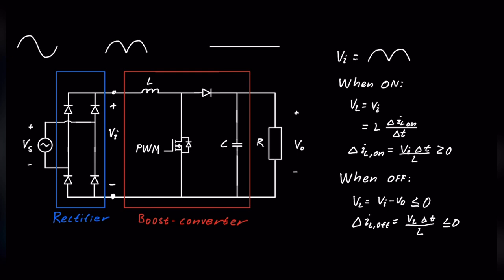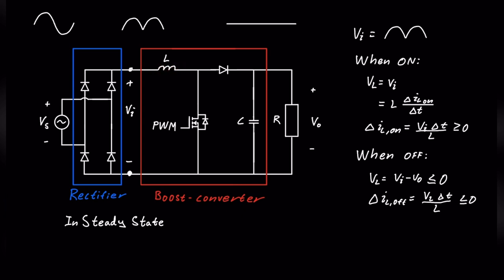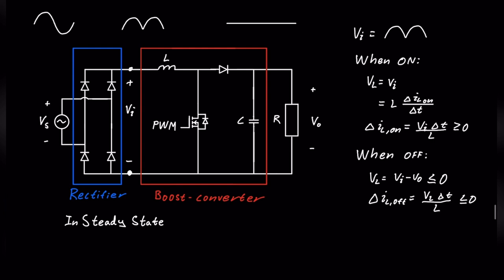In steady state, the inductor current cannot rise to infinity. Therefore, on average, the change of current over the inductor needs to be zero. So the change of current when on plus the change of current when off equals zero. Substituting: VI times delta-t-on over L, plus VL times delta-t-off over L equals zero. We can cancel out L. The time is different for on and off, so we cannot cancel that.